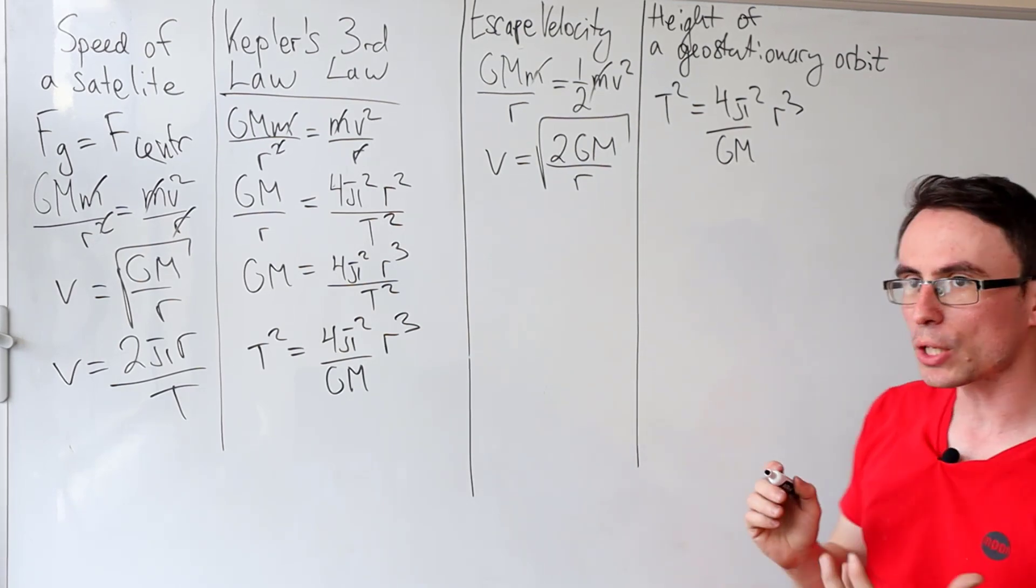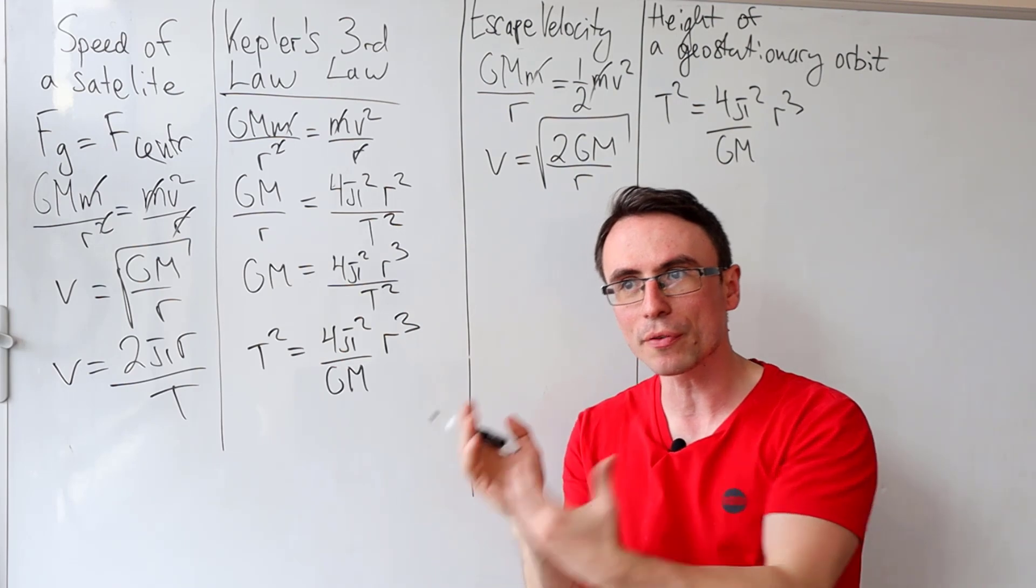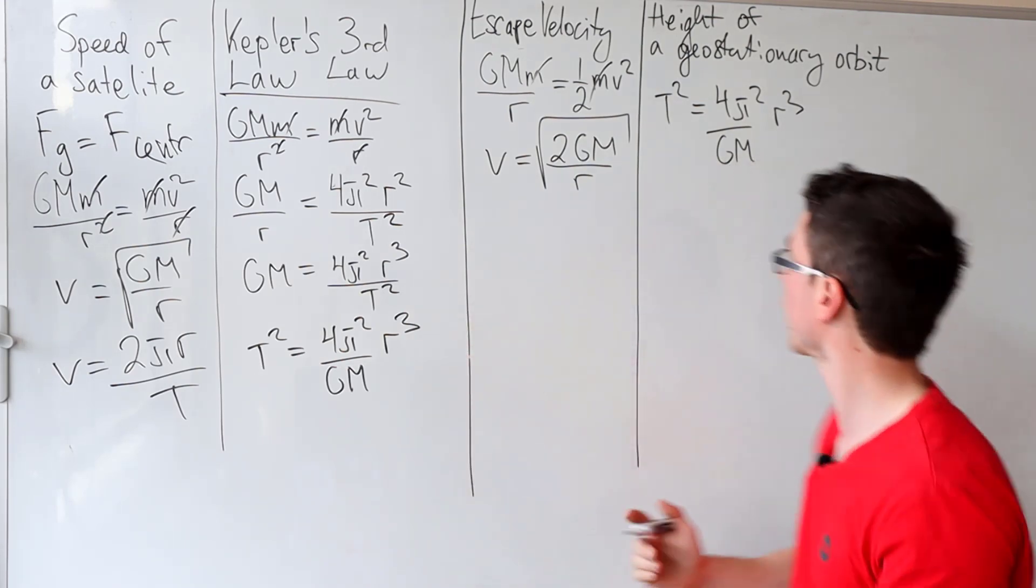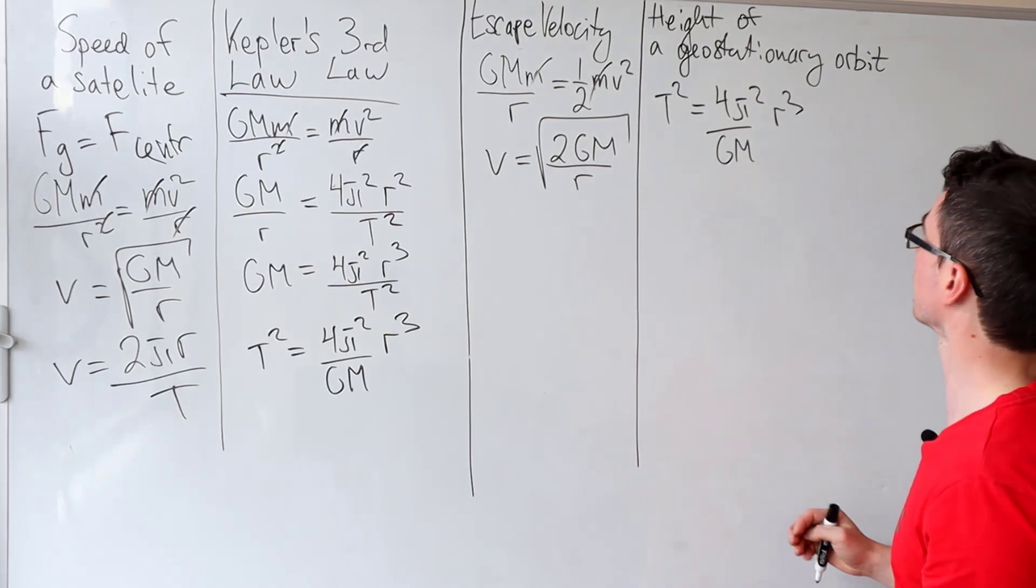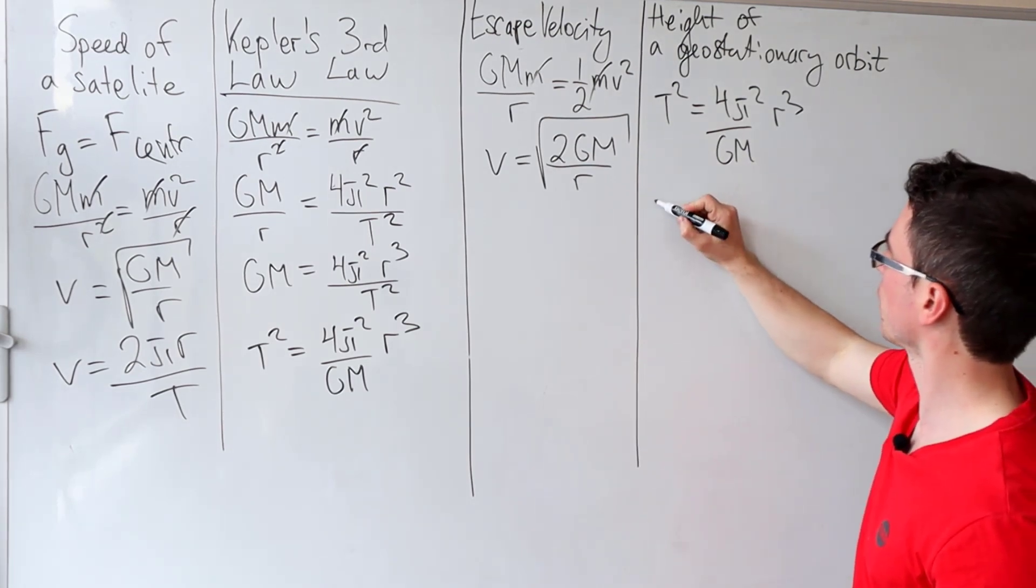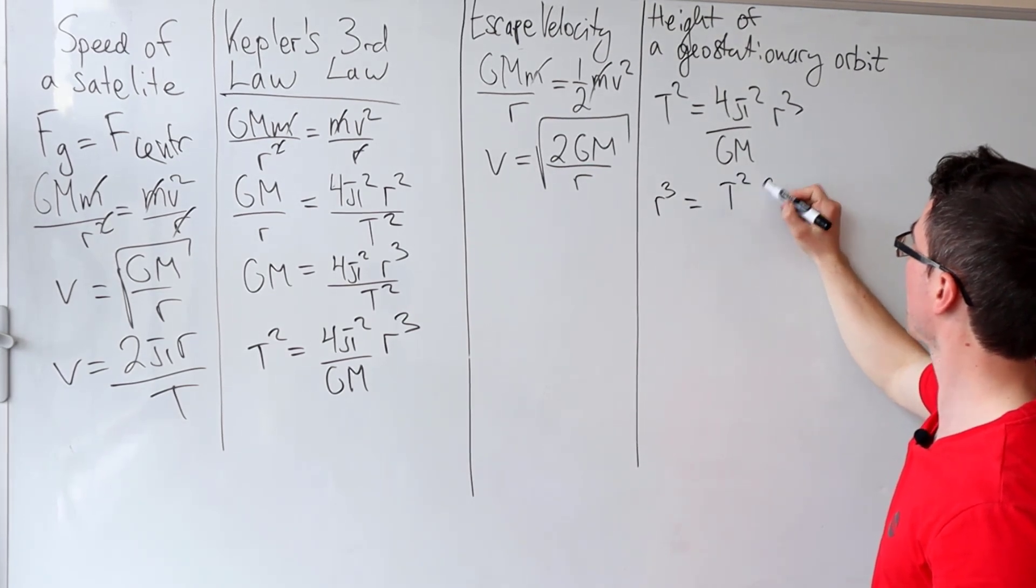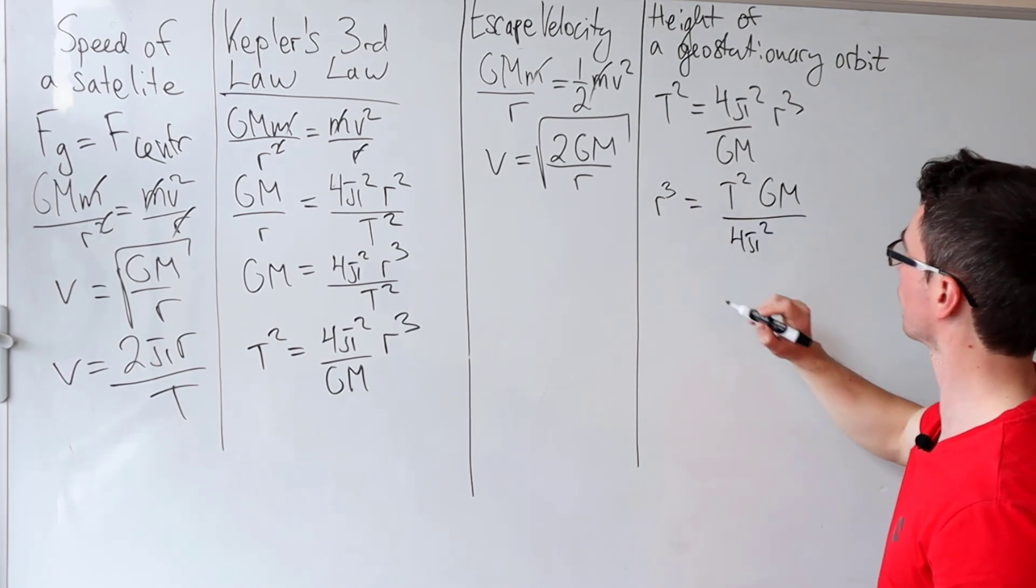Now in a geostationary orbit, the orbital period, if we're talking about the earth, will match the orbital period of the earth, which is 24 hours. So my t² will just be 24 hours in seconds. Now let's calculate the distance r to the center of the earth. So r³ will be t²GM/4π².